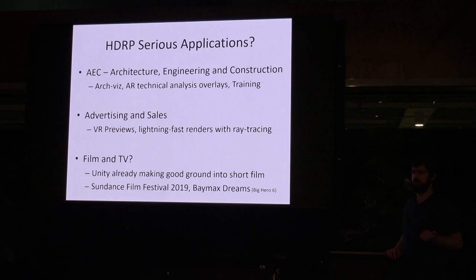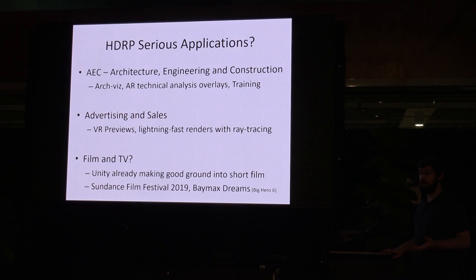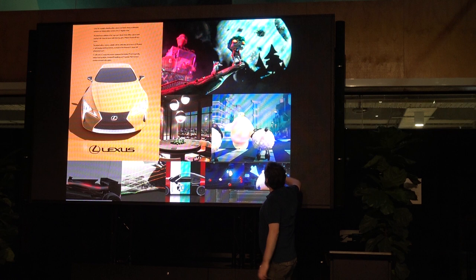That's real-time advertising rendering — instead of running your offline renderer from Maya overnight, you're getting 30 frames a second. Film and TV is another area they've pushed into significantly. I believe they had 10 entries in the Sundance Film Festival 2019 running on Unity — films and interactive applications, as well as the short film Baymax Dreams based on the Big Hero 6 IP. Here are a couple of examples of that work.